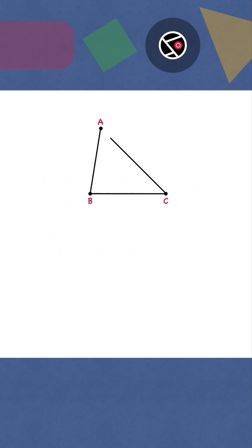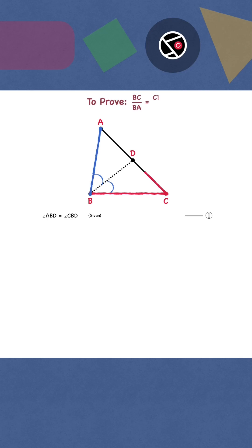We have a triangle ABC. BD bisects angle ABC, so angle ABD equals angle CBD. We have to prove that BC by BA equals CD by AD.